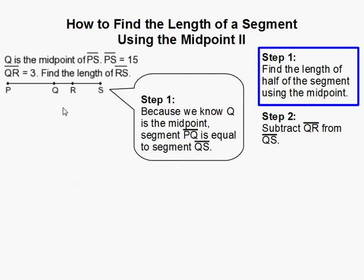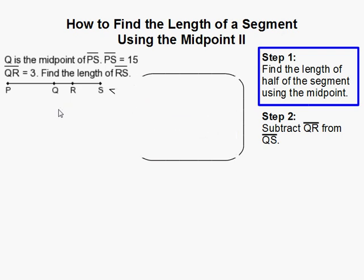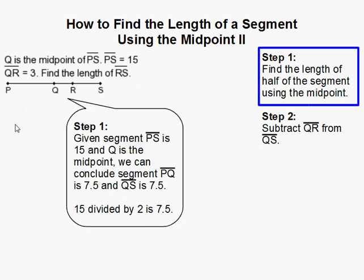Since we know that Q is the midpoint of PS, we know that PQ is equal to QS. And since we know the entire segment is 15, if we want to find half, which would be the length of QS or PQ, we can just divide 15 by 2 and we get 7.5. So that means PQ is equal to 7.5 and QS is equal to 7.5.